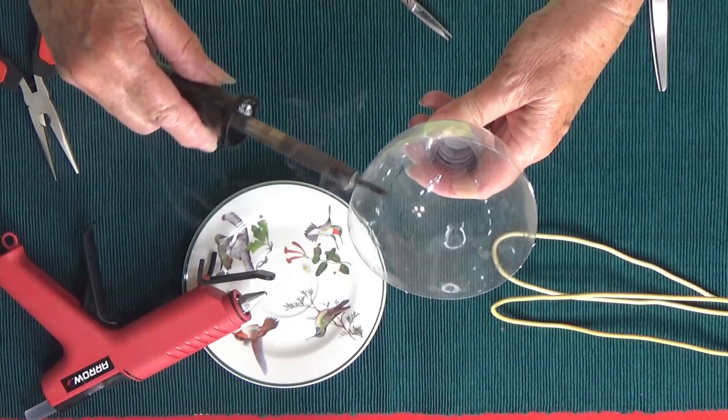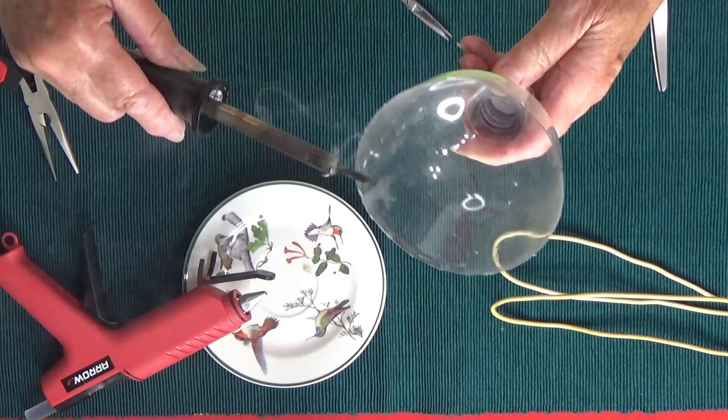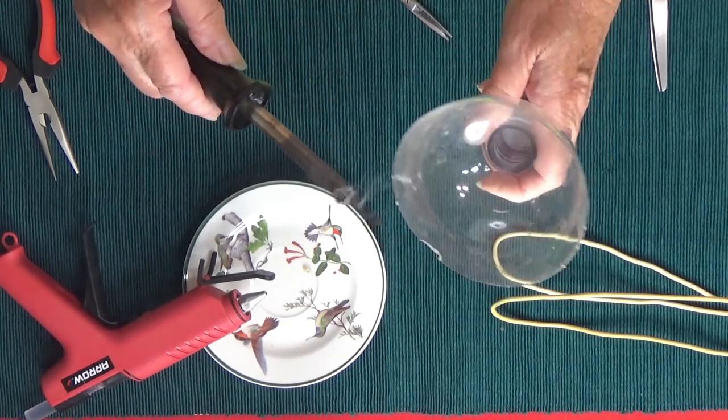Now we have this. Now we can soften the edge with a soldering iron. You know how I love my soldering iron. Just so it's not sharp or anything, give it a little bit of a softer edge.